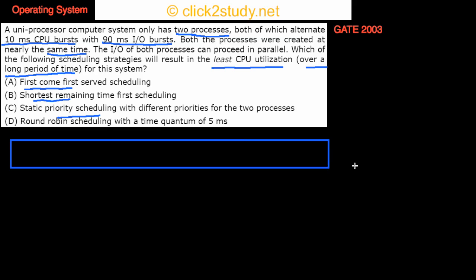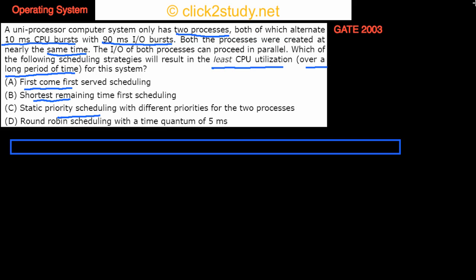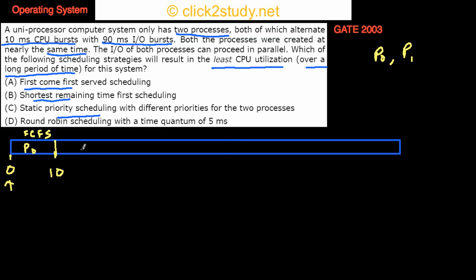Let me draw a timeline first so it's easier to see what's going on. Suppose this is zero and all processes start at zero. Let's talk about first come first serve first. We name the processes P0 and P1. In first come first serve, suppose P0 comes first, so for the first 10 milliseconds P0 will run on the CPU.